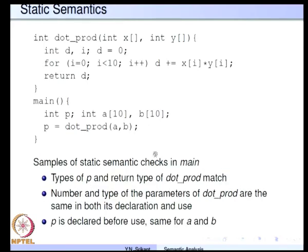Let us take some examples of the static semantic checks that can be done by a compiler. Consider a simple function and a main program which calls it — a function to calculate the dot product of two arrays. Int x and int y are the two arrays of integers. The program has a loop i equal to 0, i less than 10, i++, and d accumulates the dot product: d equals d plus x[i] star y[i]. Then return d.